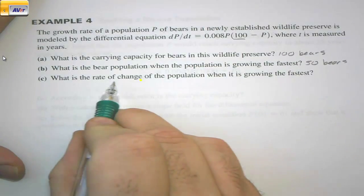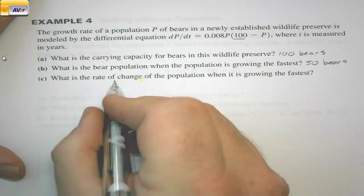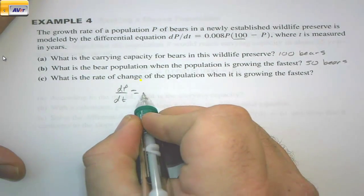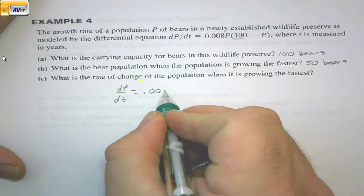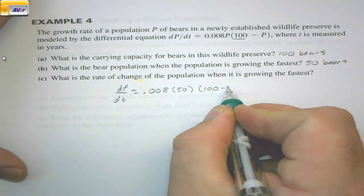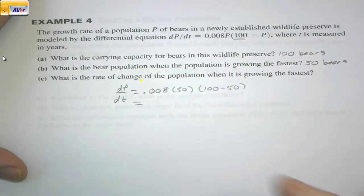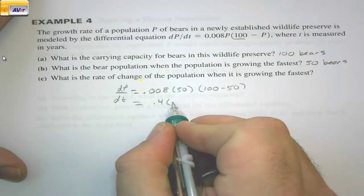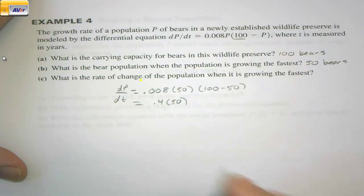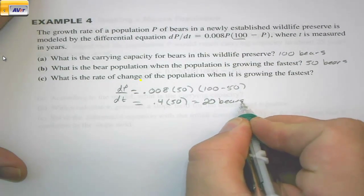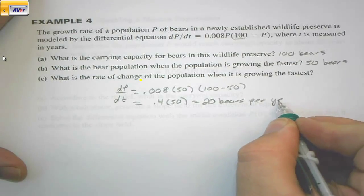What is the rate of change of the population when it is growing the fastest? Well, the rate dP/dt is growing the fastest. We have 0.008P when the population is 50. So we have 100 minus 50 here. We have 50 times 0.008, that is going to be 0.4. So 0.4 times 50 is equal to 20 bears per year.